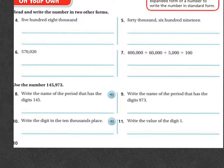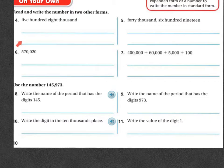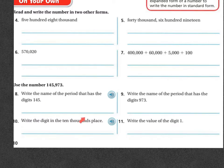I want you to do the rest on your own. You just need to look at what form is given. For example, where they've given you the word form, write it in standard form. Where they've given you the standard form, write the word form and the expanded form. Do that on all of these. If you need help, I'm going to be at the carpet.